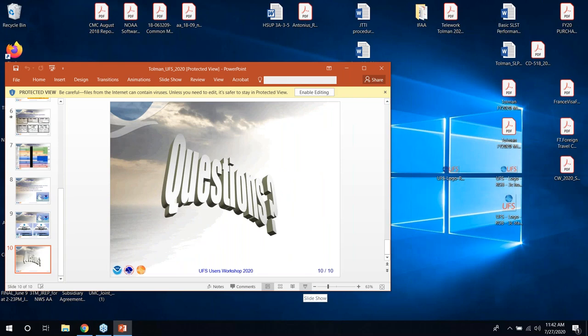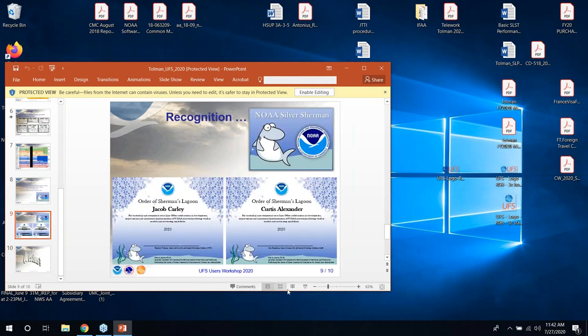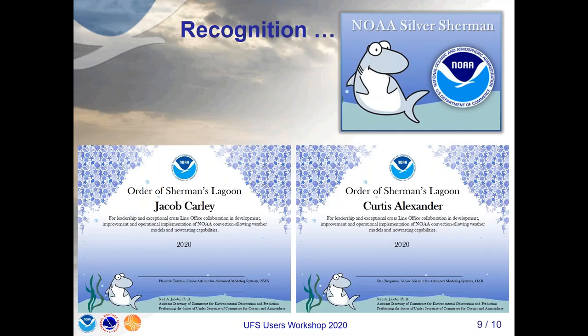Thank you. I want to point out the continuity between the last decade and this decade and the actual accomplishments done by Jacob and Curtis in leading the convection-allowing modeling capabilities that have actually been set up already. Now with the plans that they're going to tell us more about with the UFS era as we go into this decade. Hendrick and I are just delighted to work together on getting this recognition about this cross-line-office collaboration. This is kind of unprecedented, but hopefully there'll be more of these coming up in the future. Jacob and Curtis have set the tone for what this ought to look like with NOAA research and other service working together. Big congratulations to both Curtis and Jacob.